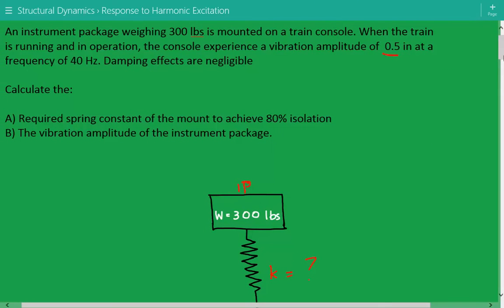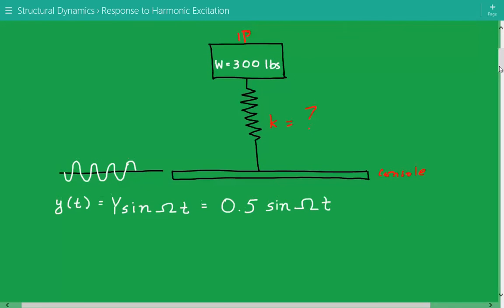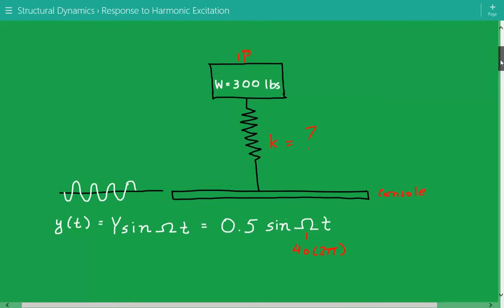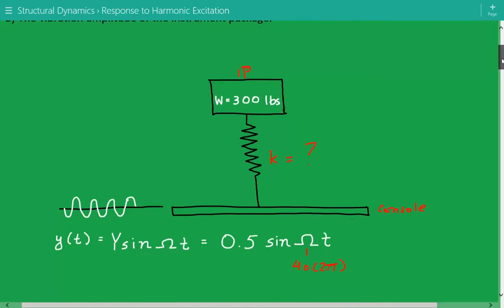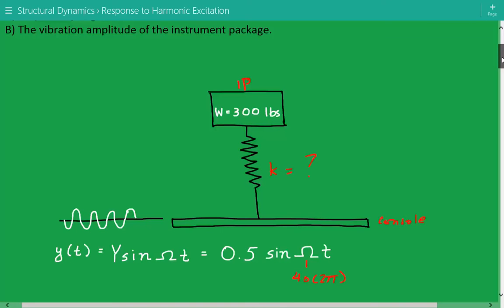At a frequency of 40 Hertz, so it's 0.5 times sine of capital omega t, and this capital omega is equal to 40 Hertz times 2 pi in order to get into radians per second. So we need to solve for k and we need to find the vibration amplitude of this instrument package.